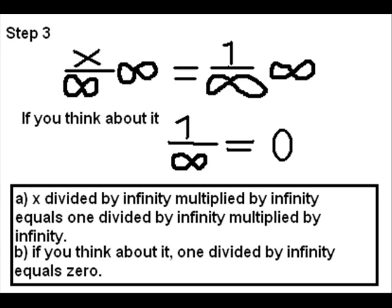Now, before you point out that the infinity cancels out the division by infinity and x still equals 1, think about this: 1 over infinity, 1 divided by infinity, is 0.